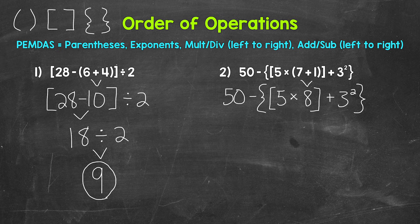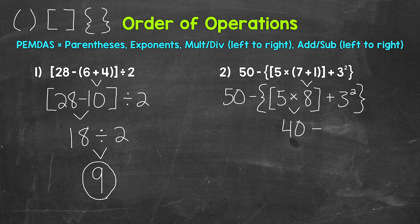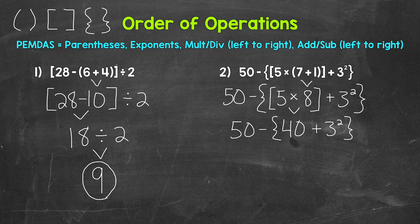Let's continue to work through the order of operations. We have both brackets and braces, so we need to do the innermost group next — that's the brackets. We have 5 times 8 within the brackets. 5 times 8 is 40. Bring down everything we did not use: plus 3 squared, within braces. Now we have 50 minus, then braces, 40 plus 3 squared, end braces.